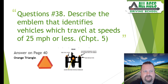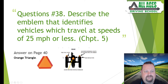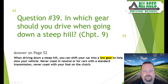Question number thirty-eight: describe the emblem that identifies vehicles which travel at speeds of 25 miles per hour or less. Chapter five, page 40. It's a triangular emblem — orange with a darker orange border around the triangle edges. You commonly see these slow-moving vehicle emblems on tractors, especially during spring and summer when they're mowing grass along roadsides.